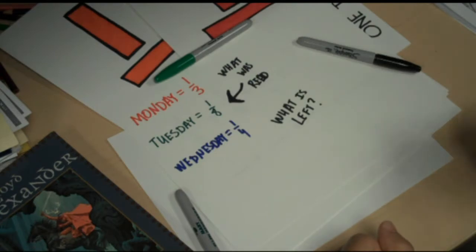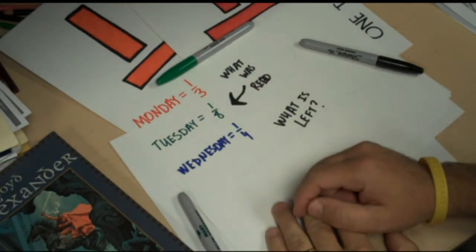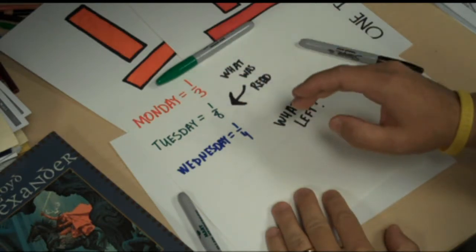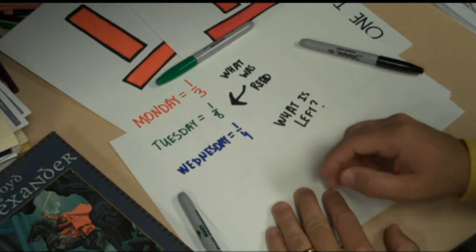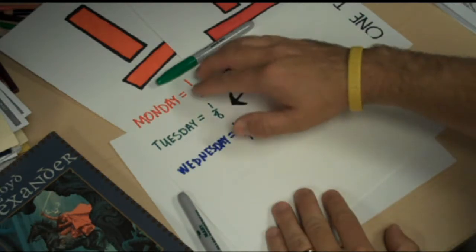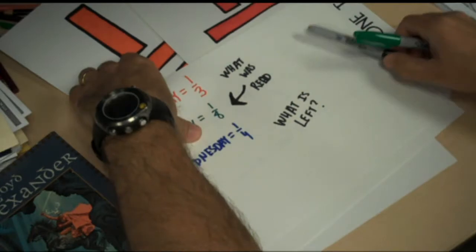All right, so I want to show you how I solved this problem. Again, you want to make sure you understand what the problem is and what we're trying to do. So, on Monday I read a third of the book, on Tuesday an eighth of the book, and on Wednesday a fourth of the book. So, this represents what I've already read, and what I'm trying to figure out is what is left to read.